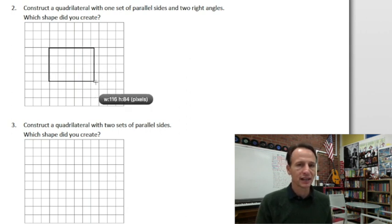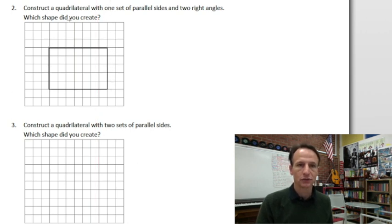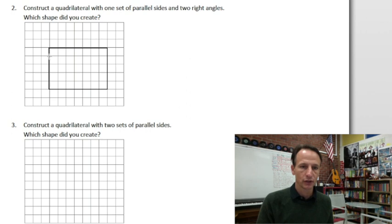I'm going to go with: it says one set of parallel sides, so that doesn't mean in my mind that it can't have two sets of parallel sides. And saying that it has two right angles doesn't mean it cannot have four right angles. So I'm going to draw a rectangle here.